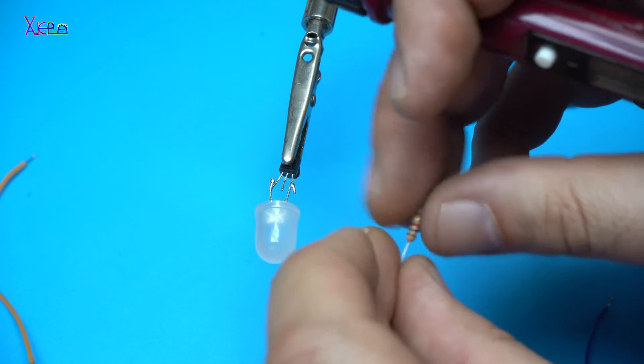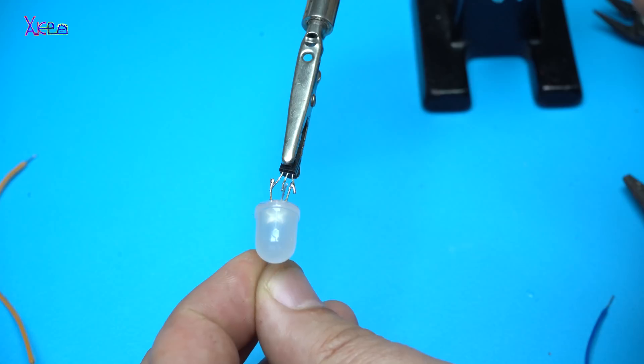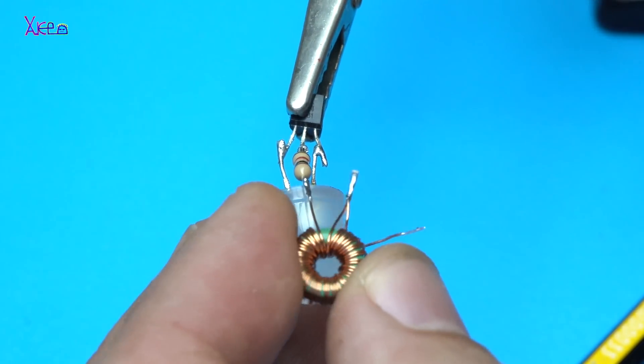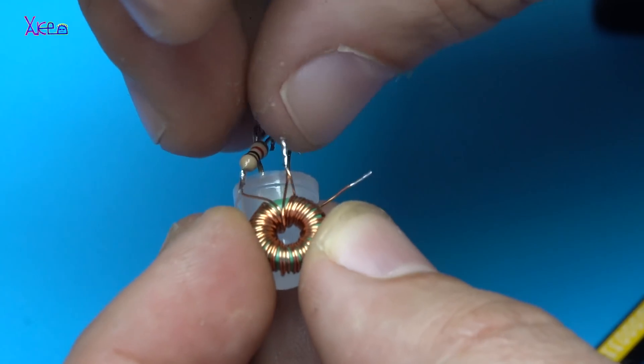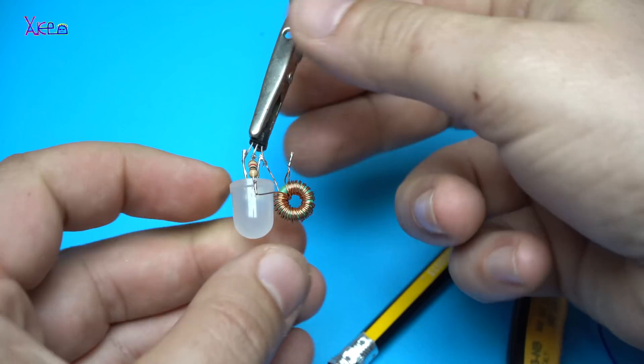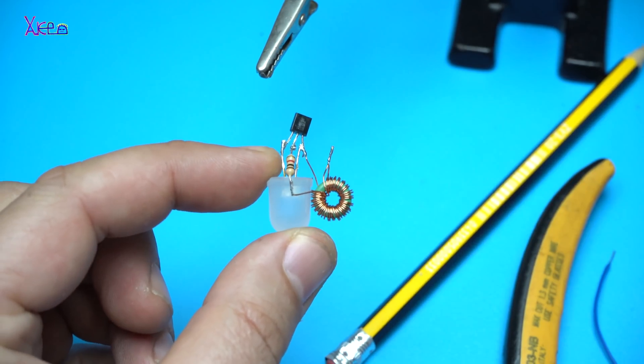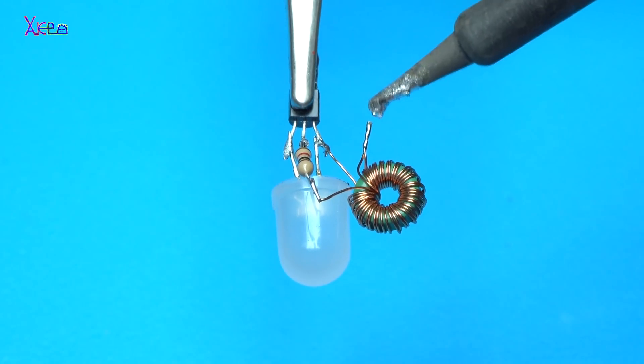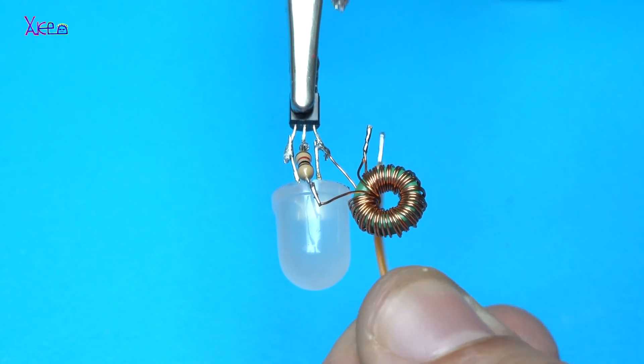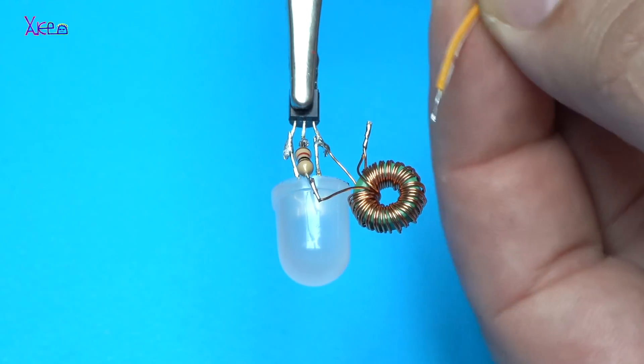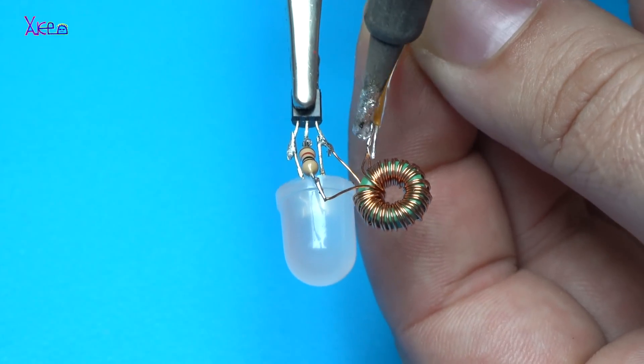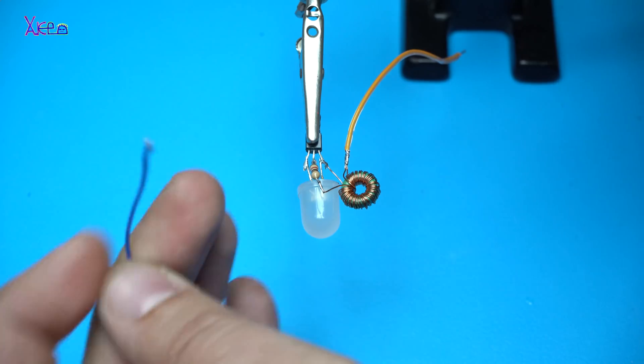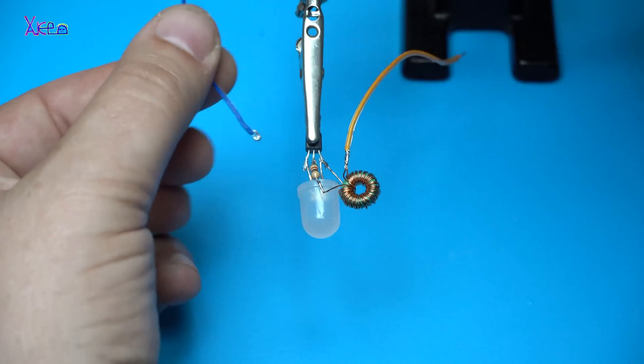The 1K ohm resistor should be soldered on base. Positive wire from the battery goes on these 2 wires that are soldered together. And the negative wire from the battery goes here on emitter of the transistor.